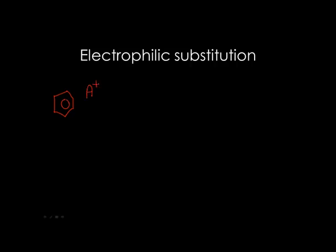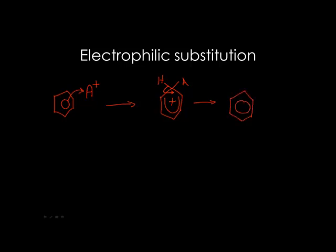Electrophilic substitution of benzene: benzene will react with an electrophile. It will accept a pair of electrons, forming a substituted intermediate. Then, in order to restore the stability of the pi system, the electrons from a C−H bond will go back into the pi system and the bond will break.